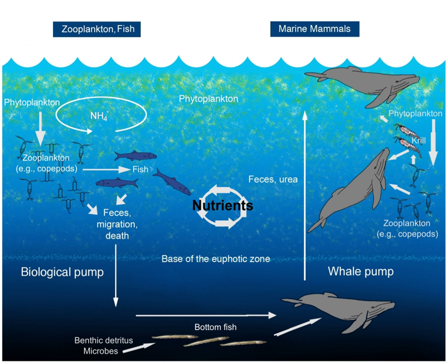Although the earth constantly receives energy from the sun, its chemical composition is essentially fixed, as additional matter is only occasionally added by meteorites. Because this chemical composition is not replenished like energy, all processes that depend on these chemicals must be recycled. These cycles include both the living biosphere and the non-living lithosphere, atmosphere, and hydrosphere.